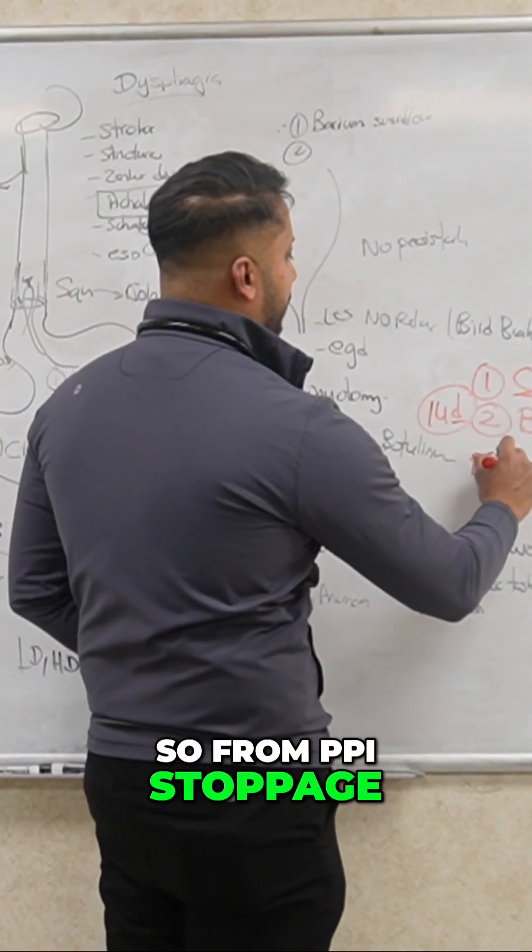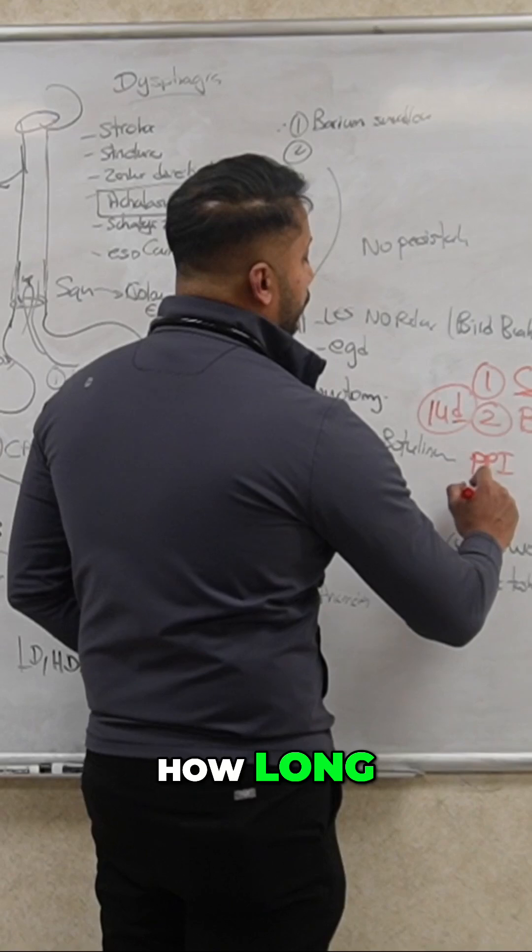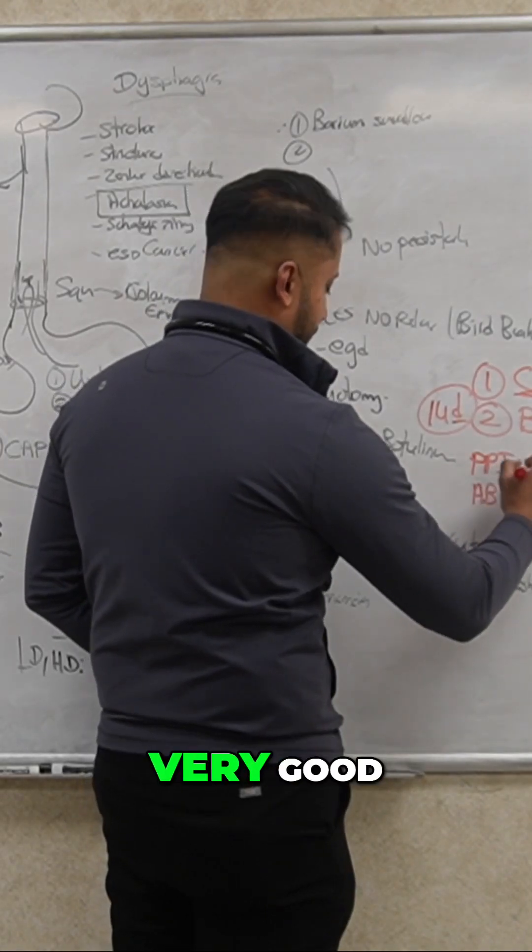So from PPI stoppage, how long? Two weeks from PPI. From antibiotic stoppage, how long? Four weeks. Very good.